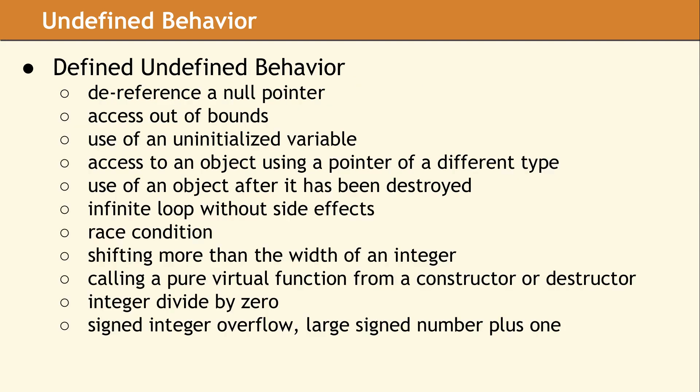This is a partial list of items defined in the C++ standard as resulting in undefined behavior — keep in mind, this is not a complete list. The information for what is defined to be undefined behavior is scattered throughout the standard. Most of the ones identified here are not only undefined behavior, but are capable of causing serious problems in real code. Many of these, like using an uninitialized variable, are easily avoided by paying attention to the structure of your code or using compiler warnings.